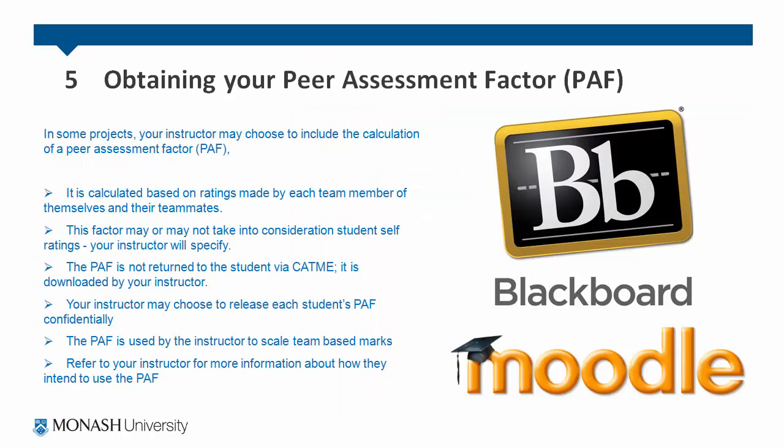In some projects, your instructor may choose to include the calculation of a peer assessment factor. It's calculated based on ratings made by each team member of themselves and their teammates. This factor may or may not take into consideration student self-ratings — your instructor should specify. The peer assessment factor is not returned to the student via CATME; it is downloaded by your instructor.